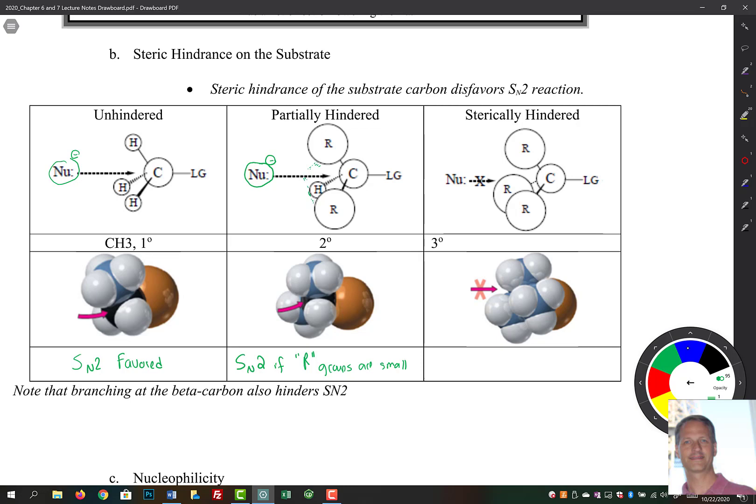Now, if we're super sterically hindered here, we come in here and we have these R groups, and we're just blocked entirely. So now the nucleophile itself just can't make its way in. So here we say no SN2. So we would simply write NR for no reaction.